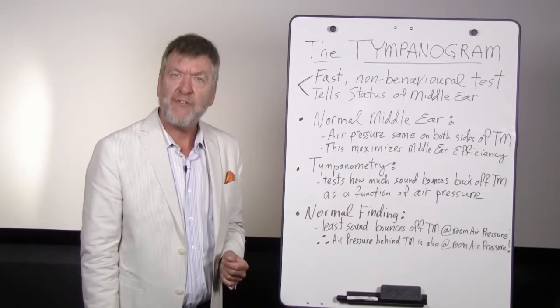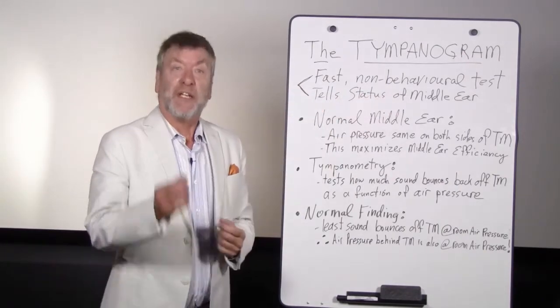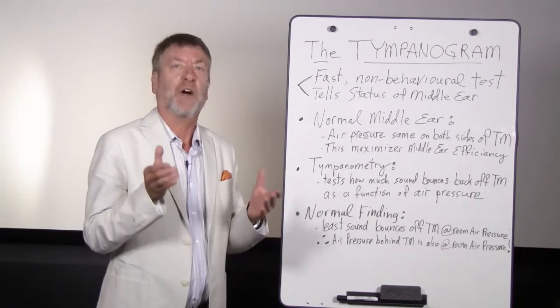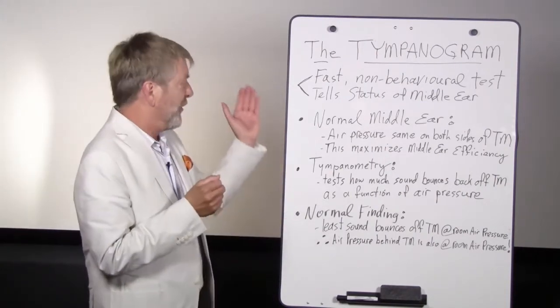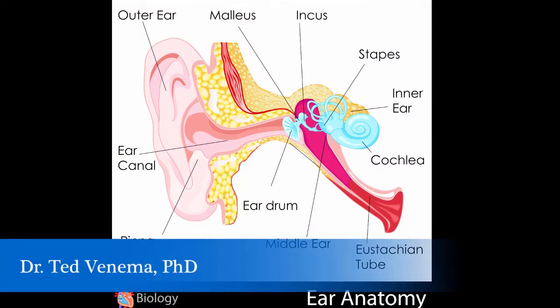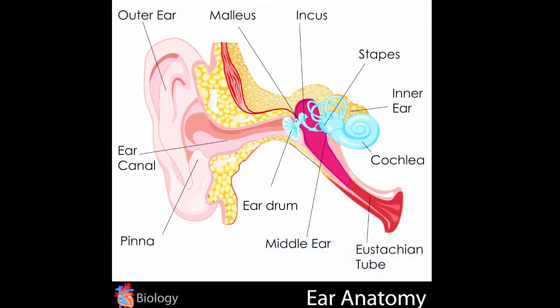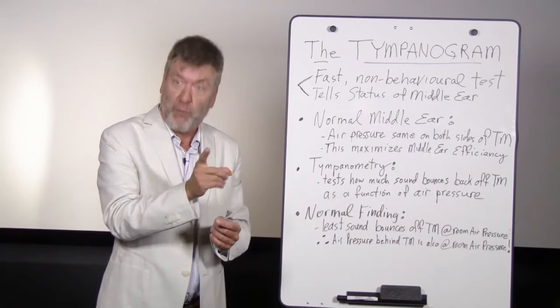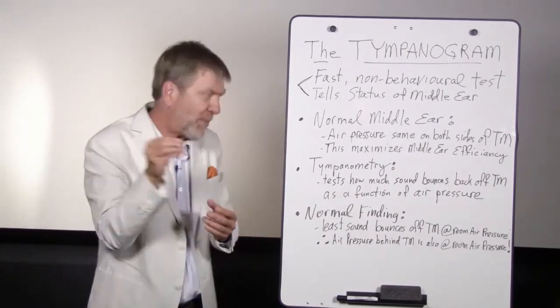Tympanometry is a fast, non-behavioral test of the middle ear. It rapidly and quickly tells you the status of the patient's middle ear function without any voluntary compliance on the part of the patient. The main assumption behind tympanometry is that the normal middle ear has air pressure that's even on both sides of the tympanic membrane. When the air pressure is even on both sides of the eardrum, the middle ear is most efficient at passing sounds through it.